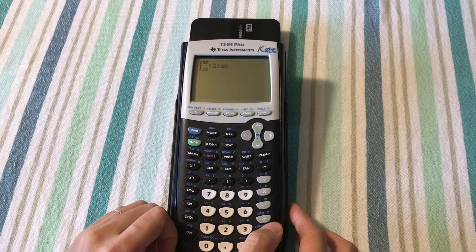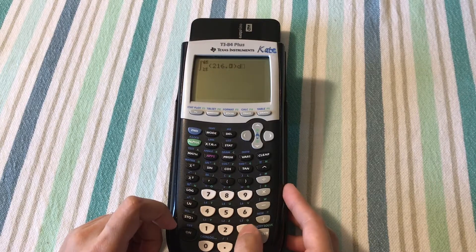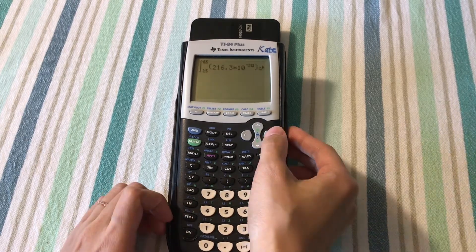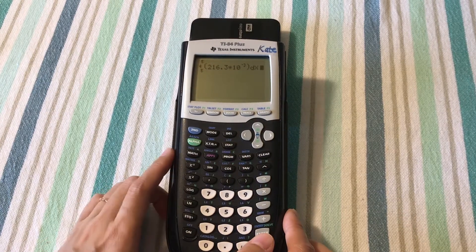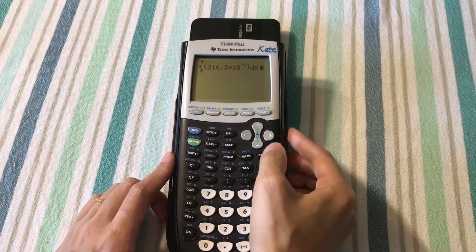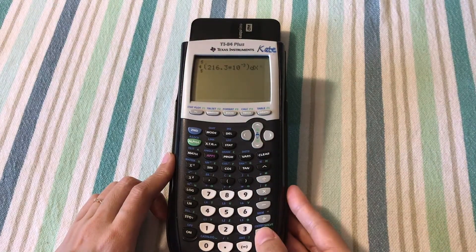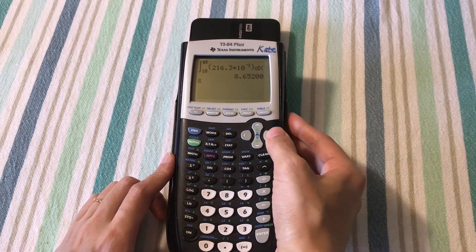Then input the constant a. You can find this value from Table B.2. My a is 216.3 × 10^-3. There's no b term. Then dx—my dx is the dT in the book. Then I got 8.6525.